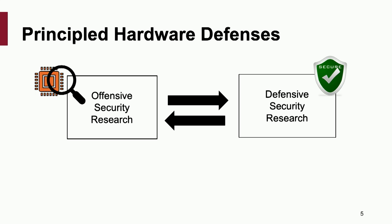In our group, we are trying to design systems using principled approaches, following two research dimensions. First, we conduct offensive security research. This is essential for hardware security researchers because, unlike software, hardware is rarely open-sourced. Processors from Intel and AMD are closed-sourced — they are like a black box. We rarely know exactly what bugs or vulnerabilities exist inside. So in our offensive research, we reverse-engineer dirty details and figure out new threat models or new vulnerabilities.